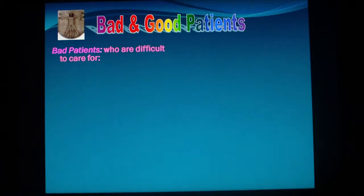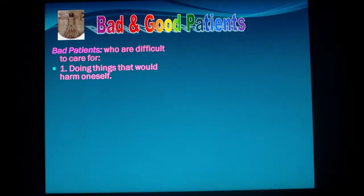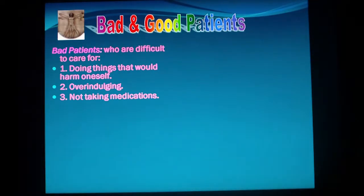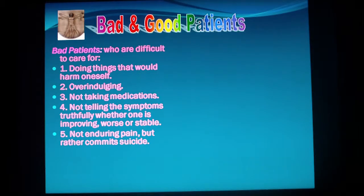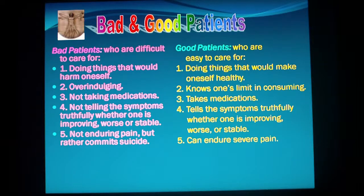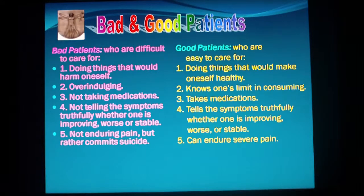The Buddha described good and bad patients. Bad patients are difficult to care for: (1) doing things that harm oneself, (2) overindulging, (3) not taking medicines, (4) not telling symptoms truthfully — whether improving, worse, or stable — and (5) not enduring pain but rather choosing to end suffering than bearing the pain. Good patients are the opposite: doing things to make oneself healthier, knowing one's limits in consumption, taking medicine, telling symptoms truthfully, and enduring pain.